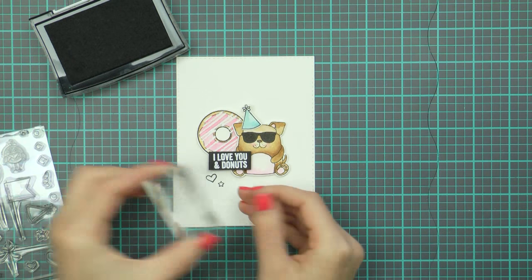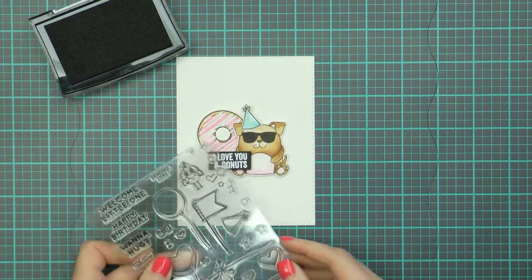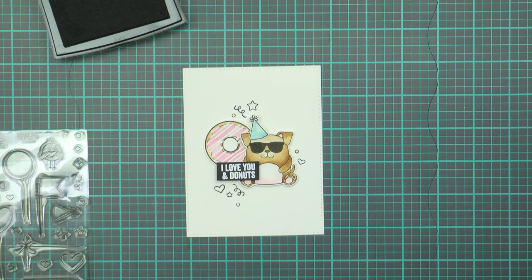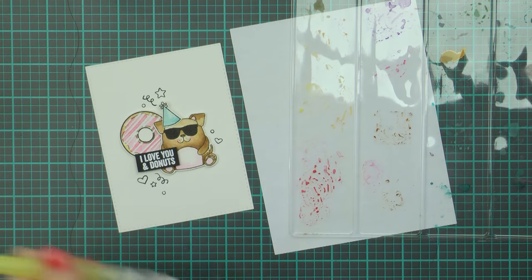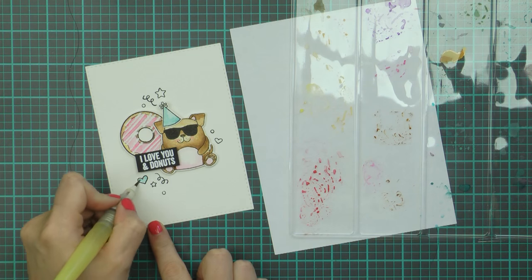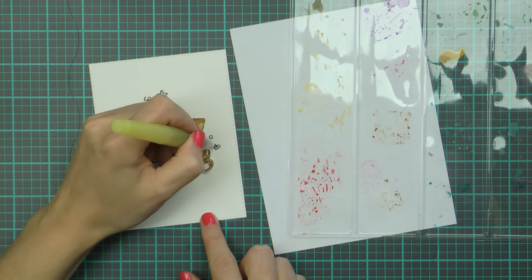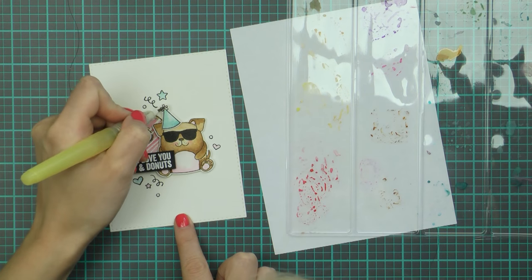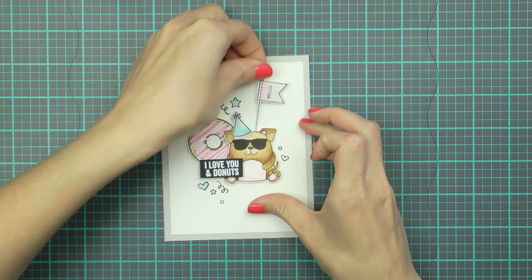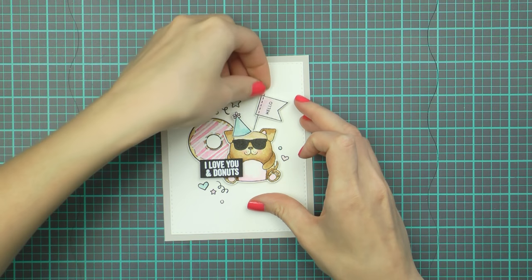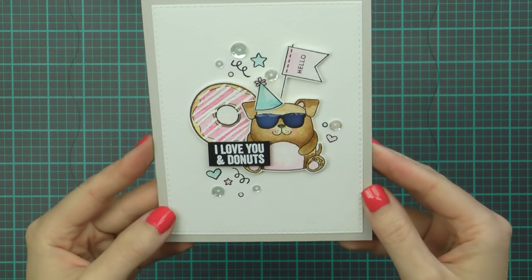Once that was done, I grabbed my VersaFine Onyx Black ink and stamped a few more elements onto the background, you know, just to keep it a little busy. There are a lot of small images in the Cuddly Critter Accessories stamp set that are perfect background fillers. So I stamped a couple of hearts, a couple of stars and a couple of circles and I watercolored them using the same colors I used to watercolor my main images. Now I still felt this card was a little empty so I stamped and die cut a banner with the hello stamped onto it and tucked that behind the puppy. I also adhered the panel onto a light gray card base and embellished the card with a few clear sequins.